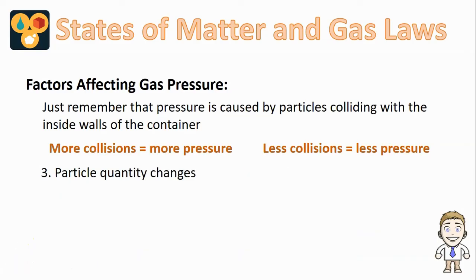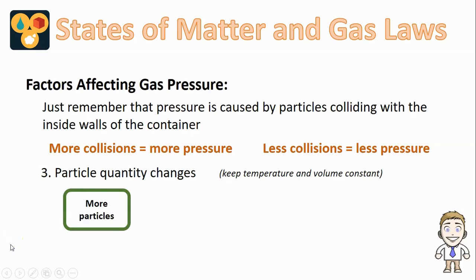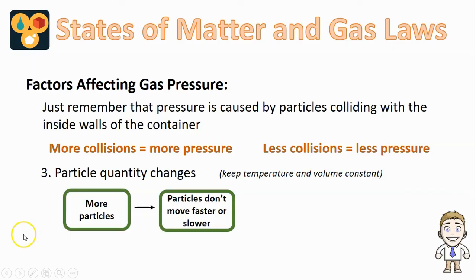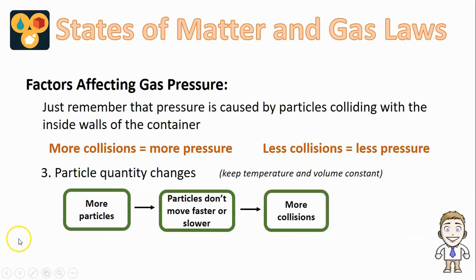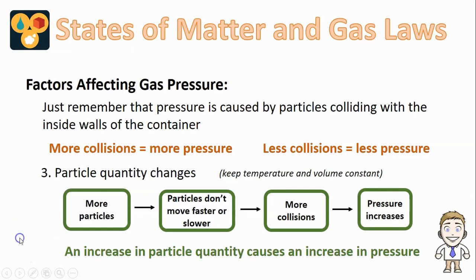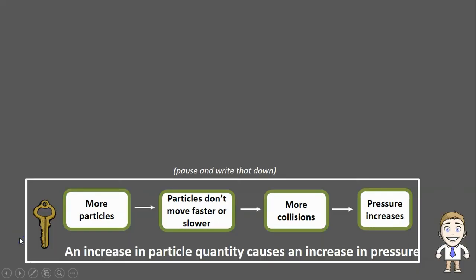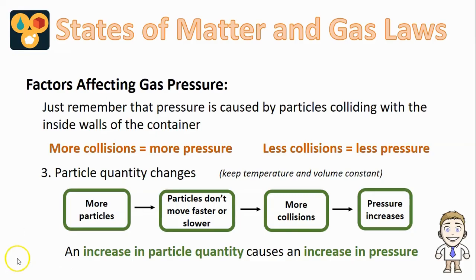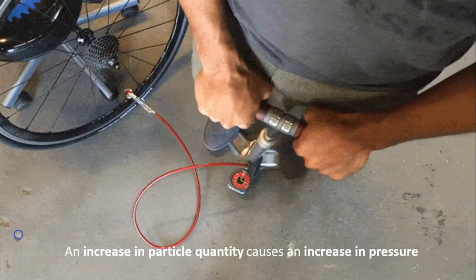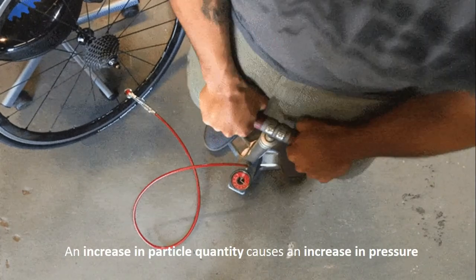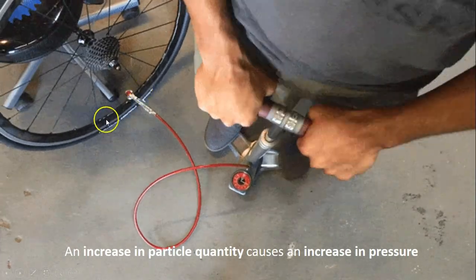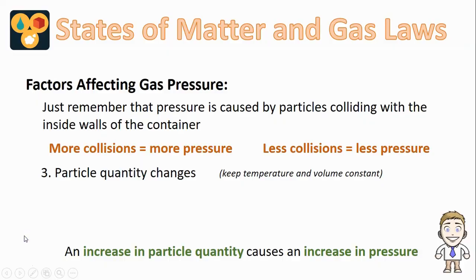Our last factor for this video is changes in particle quantity — adding more particles or taking particles away. To look at this factor, we'll keep temperature and volume the same. But if we add more particles, as long as temperature stays the same, they don't move faster or slower, but there are more of them. Because there are more of them, they'll be colliding more, and since they're colliding more, the pressure will increase. So an increase in particle quantity causes an increase in pressure. We take advantage of this every time we use a pump to inflate a bike or car tire — the pump simply adds more particles into the tire so they collide more and increase the pressure inside.